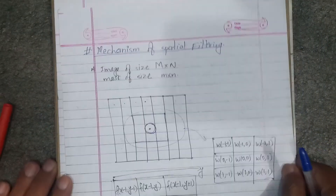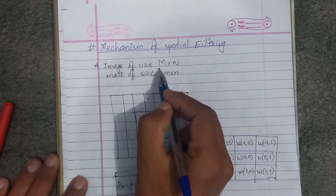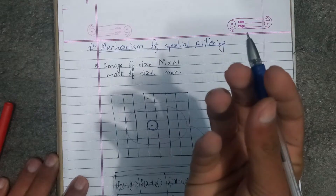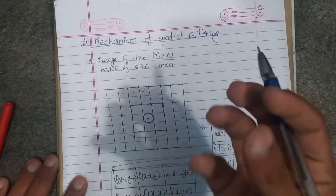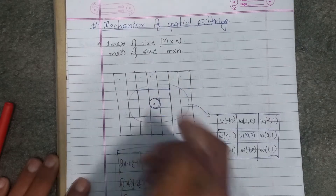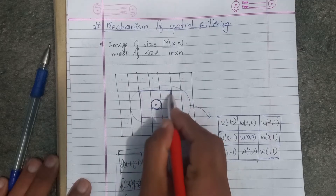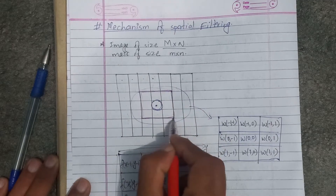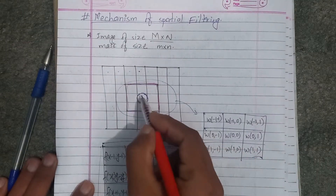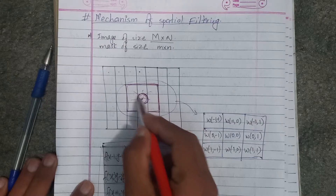The mechanism of spatial filtering works as follows: we have an image of size M×N and a mask of a certain size. The mask is positioned over the image at each pixel location. The mask, which can be named with its coordinates, is centered at each position to perform the operation.